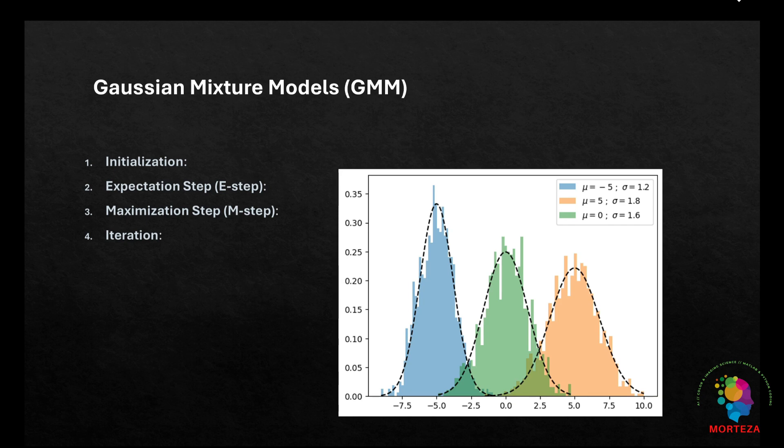The Gaussian mixture models can model clusters of different shapes, densities, and sizes, making it more flexible than k-means. It is useful for hyperspectral imaging when clusters are not spherical or when there is overlap between clusters.